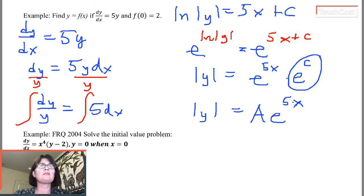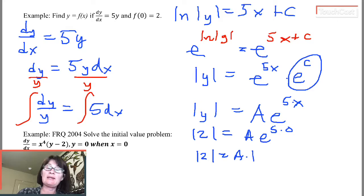I know this ordered pair, f(0) equals 2. That means when x is 0, y is 2. So the absolute value of 2 equals a e to the 5 times 0. 5 times 0 is 0. e to the 0 is 1. So the absolute value of 2 equals a times 1. So a is going to be the absolute value of 2, which is 2. So here I conclude a equals 2.